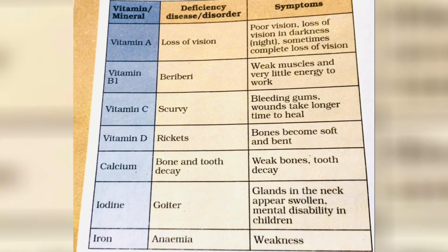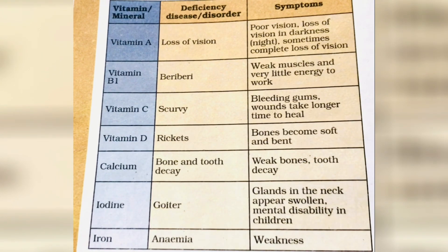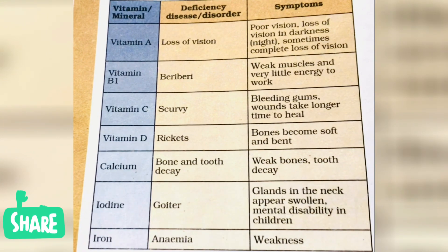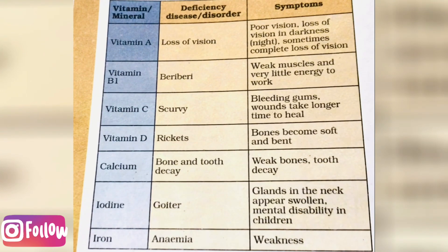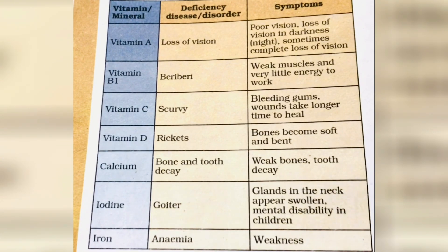Here are some memory aids for food sources: for proteins, M for meat and M for muscle - meat, eggs, and milk are sources. C for carbohydrates and C for cereals - cereals are a rich source of carbohydrates. Fats come from oils and fried foods. V for vitamins and V for vegetables - fresh leafy vegetables and fruits provide vitamins and minerals.